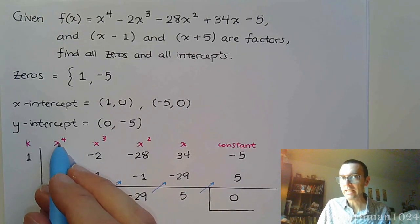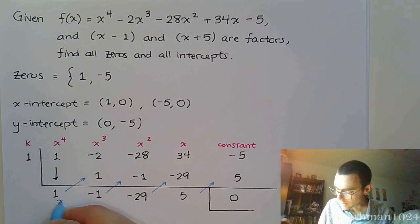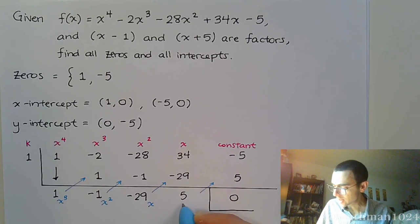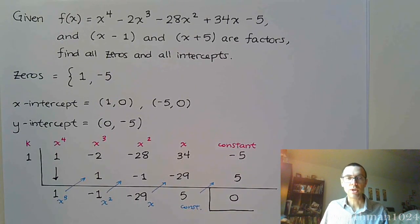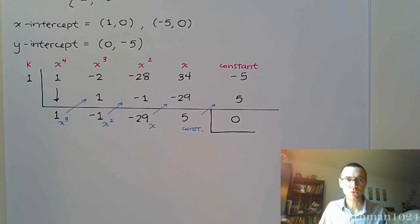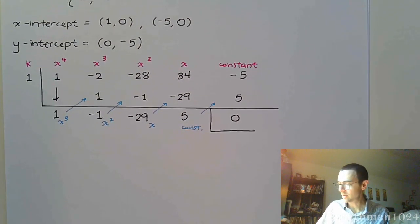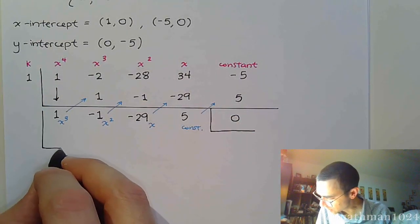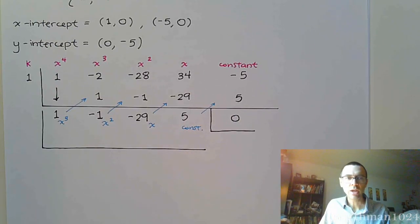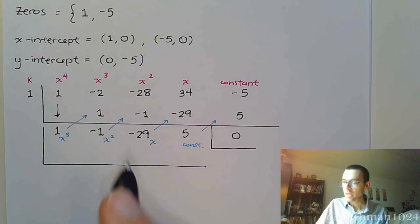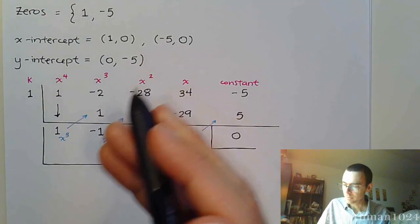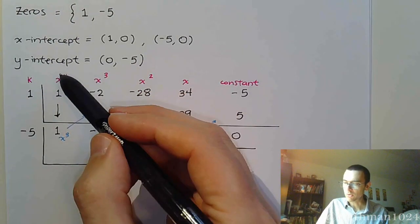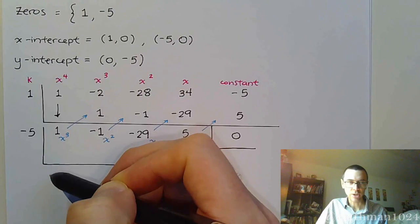This goes from x to the 4th for the lead term to x to the 3rd. And if you wanted to, just for understanding, that's your x squared term, that's x, and this is your constant. So now we're going to do synthetic division a second time. And the second time that we do it, we're using the other k value, the other 0 that we have. So the other 0 was negative 5. So we're going to use negative 5 right here and perform synthetic division again. So it's going to go from x to the 4th to x to the 3rd. Now it's going to go to x squared.